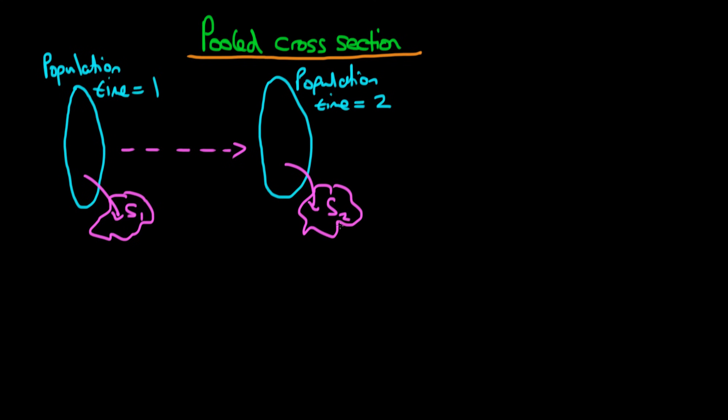Importantly, it's not the case that the individuals chosen in S1 are the same individuals chosen in S2. In fact, you can actually generalize the pooled cross-sectional model to have T periods, so we could continue arbitrarily to look at that population of individuals—it could be individual cities, individual people, or countries—but now at some time period equal to T. At that time period T, we also take a random sample of individuals.